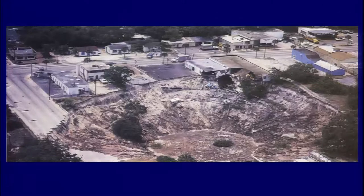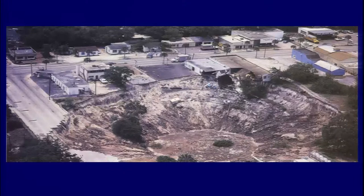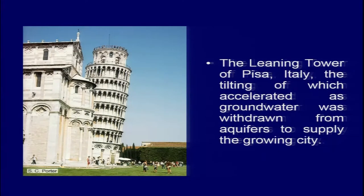Another example from the same: you can see the size of the potholes by comparing them with the dimensions of cars, which gives you a sense of their magnitude. This is because of dissolution activity. Another cause is excess removal of water — the best example being the Leaning Tower of Pisa in Italy. We will discuss the control and stabilization portion in the next class. Thank you so much.